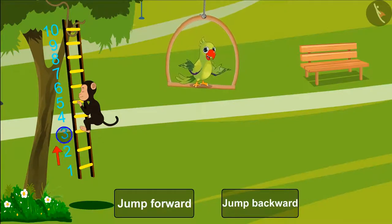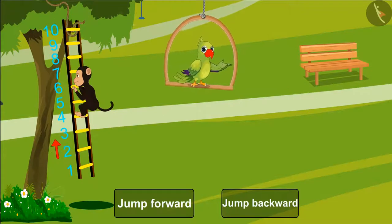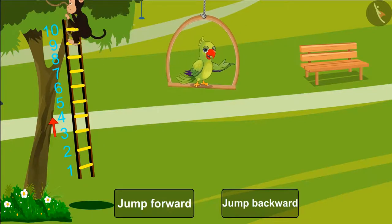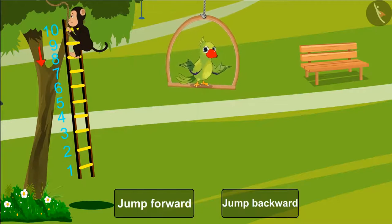At first, he was on the third step from which he jumped a step forward. So he reached the fourth step, right? Then he went to the ninth step and jumped a step backward. So he reached the eighth step.